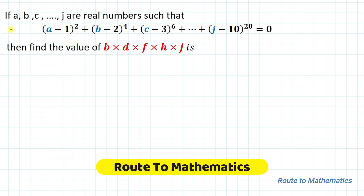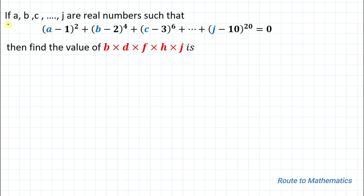Hello everyone, welcome to Route to Mathematics. In this video we are going to solve an interesting algebraic question. The given question is: if a, b, c to j are real numbers such that (a−1)² + (b−2)⁴ + (c−3)⁶ + ... + (j−10)²⁰ = 0, then find the value of b multiplied with d multiplied with f multiplied with h multiplied with j.